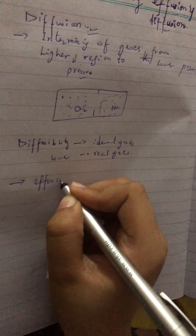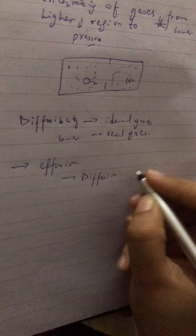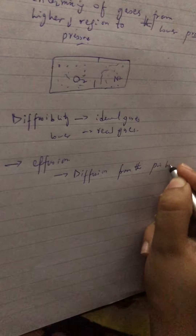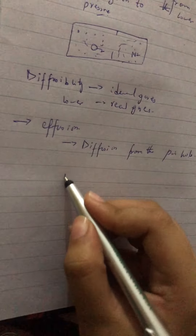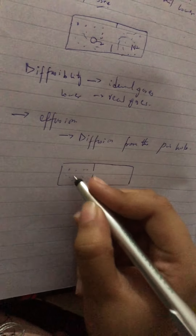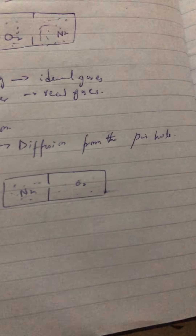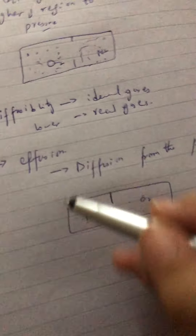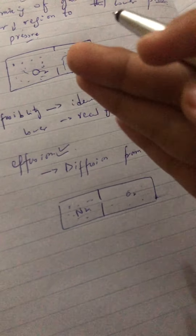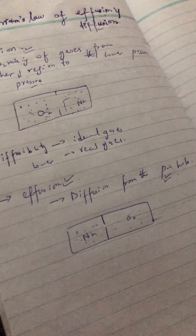Effusion is basically diffusion from a pin hole — that is called effusion. Here we have one container with very small holes and two gases. When they mix through the pin hole, that is called effusion. For example, if you make a hole in a car tire, the gas moving from the higher pressure region to the lower pressure region through that pin hole is called effusion.